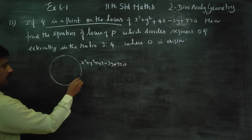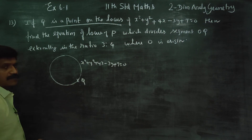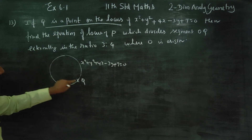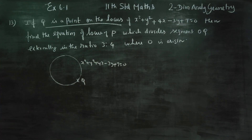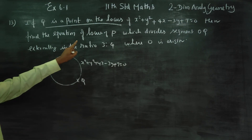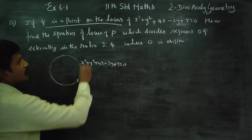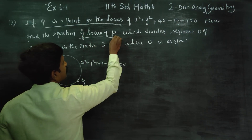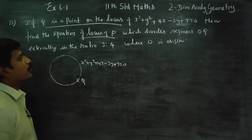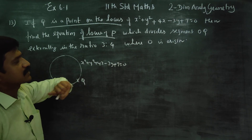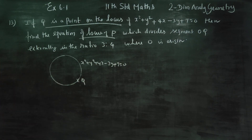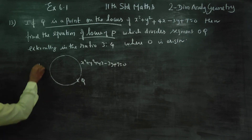Q is a point on the locus. Find the equation of the locus of P. P is a moving point. Find the equation of the locus which divides OQ externally in the ratio 3 is to 4.